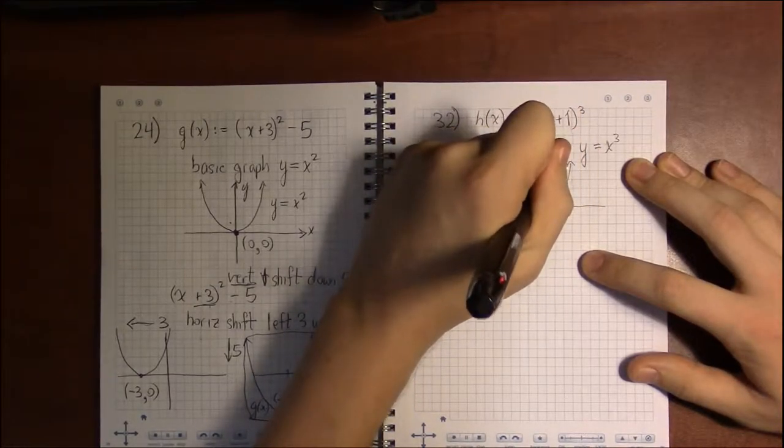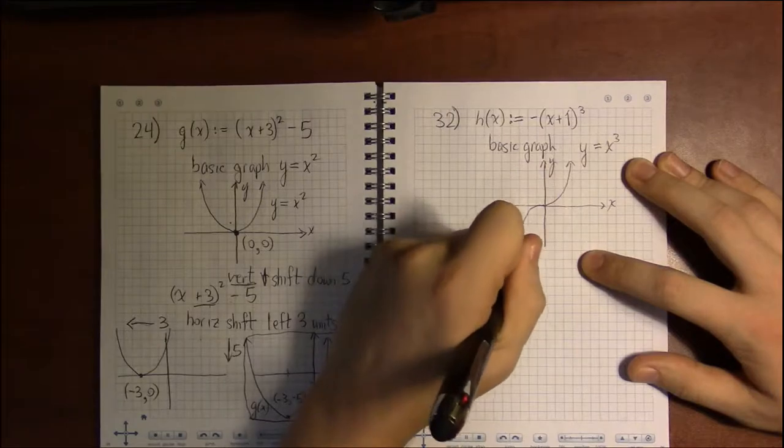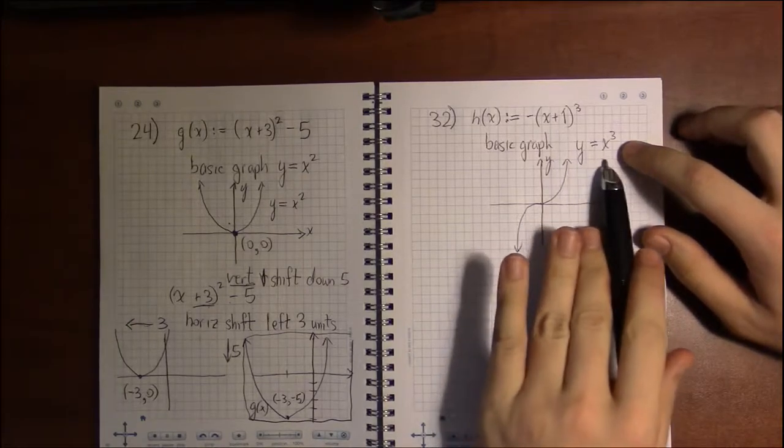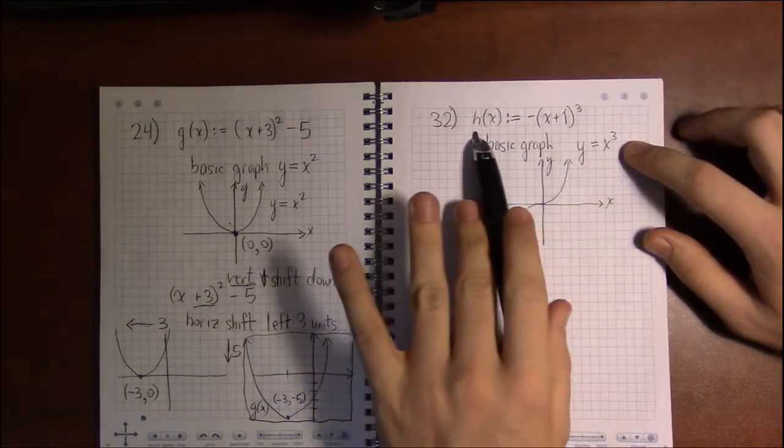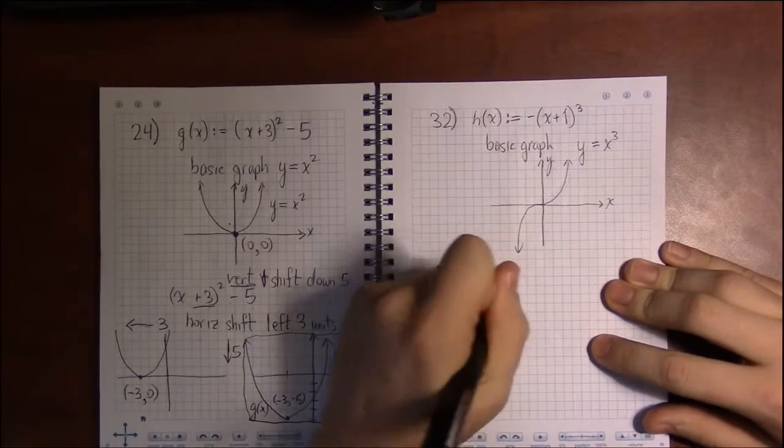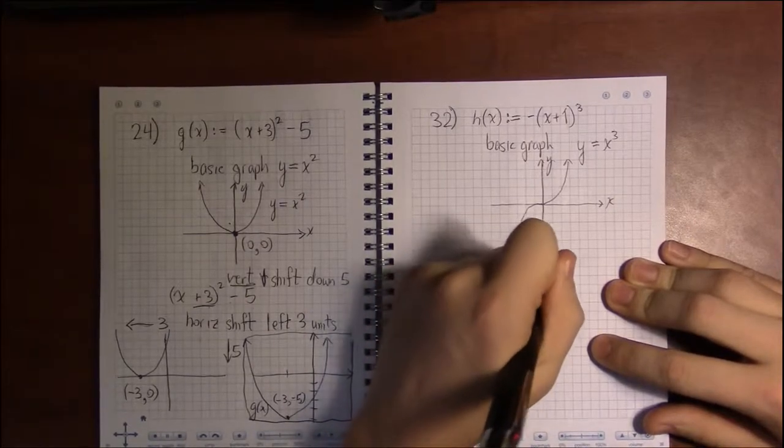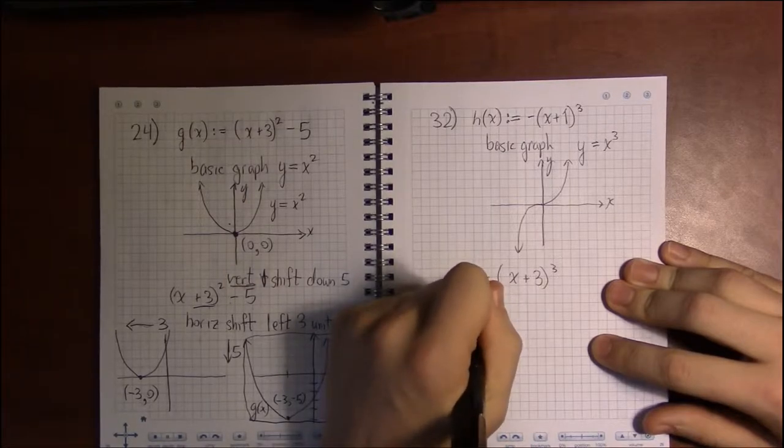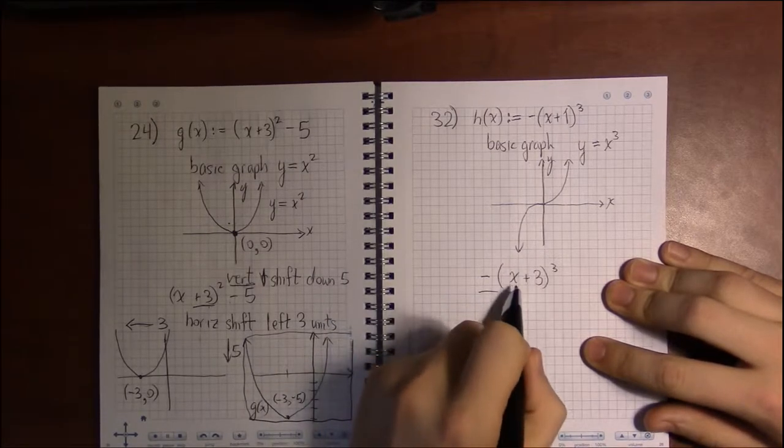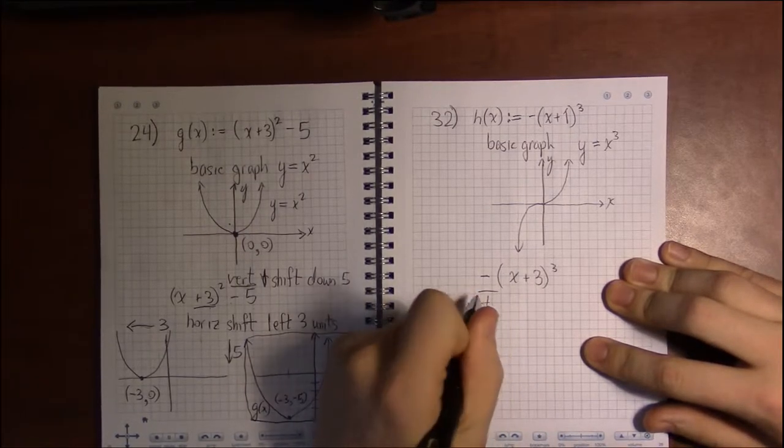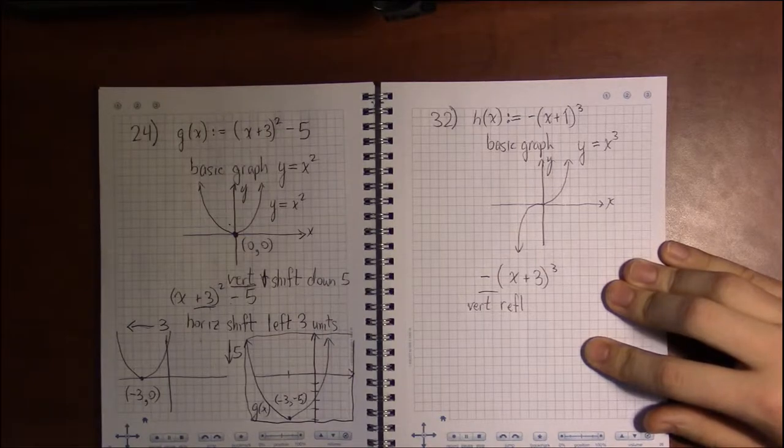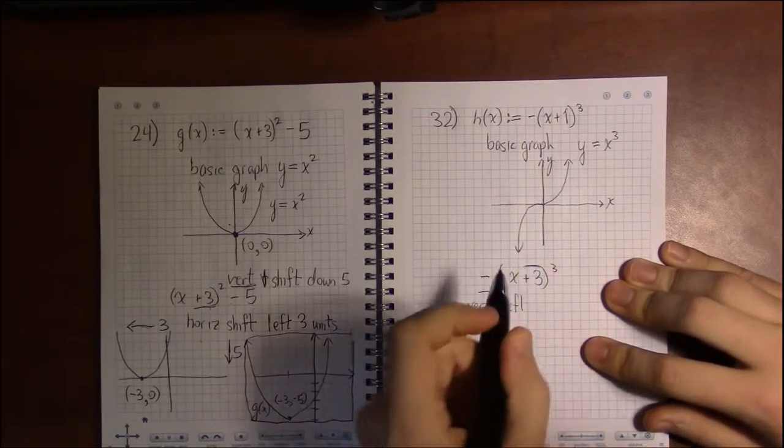So the graph of x cubed kind of snakes through the origin. Then the question becomes, what transformations do we need to apply to this basic graph to get the graph of h of x? We've got the negative x plus 3 cubed. The negative here, that's outside the parentheses. So that's away from x.